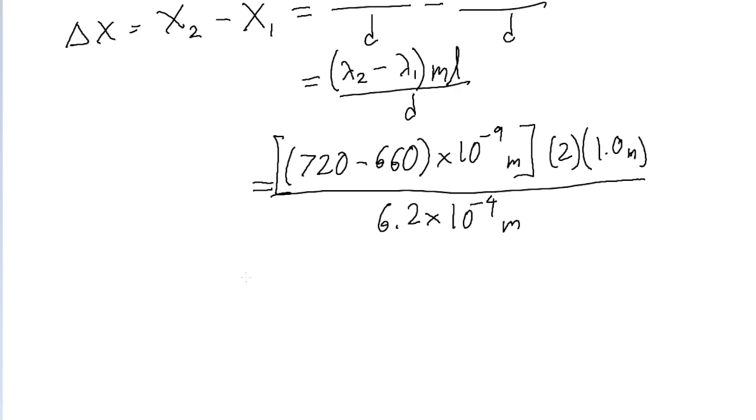If we put this into a calculator, then we get a distance between the two fringes of about 1.935 times 10 to the power of negative 4 meters, which we can round using unit prefixes to about 0.2 millimeters. And that is our answer to this problem.